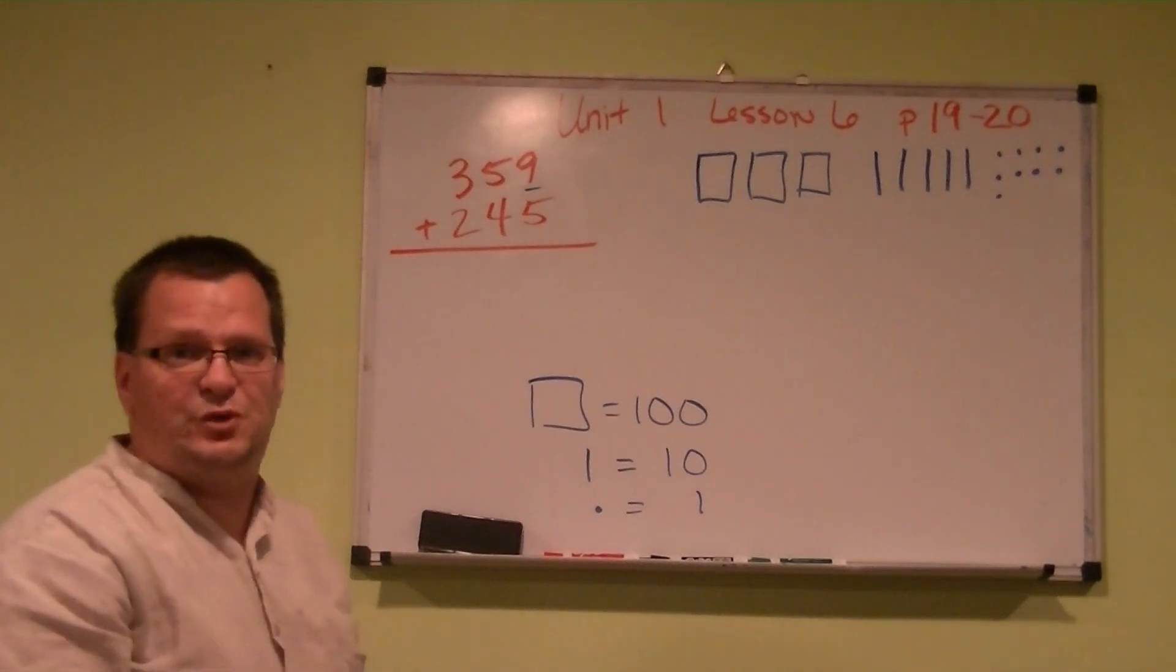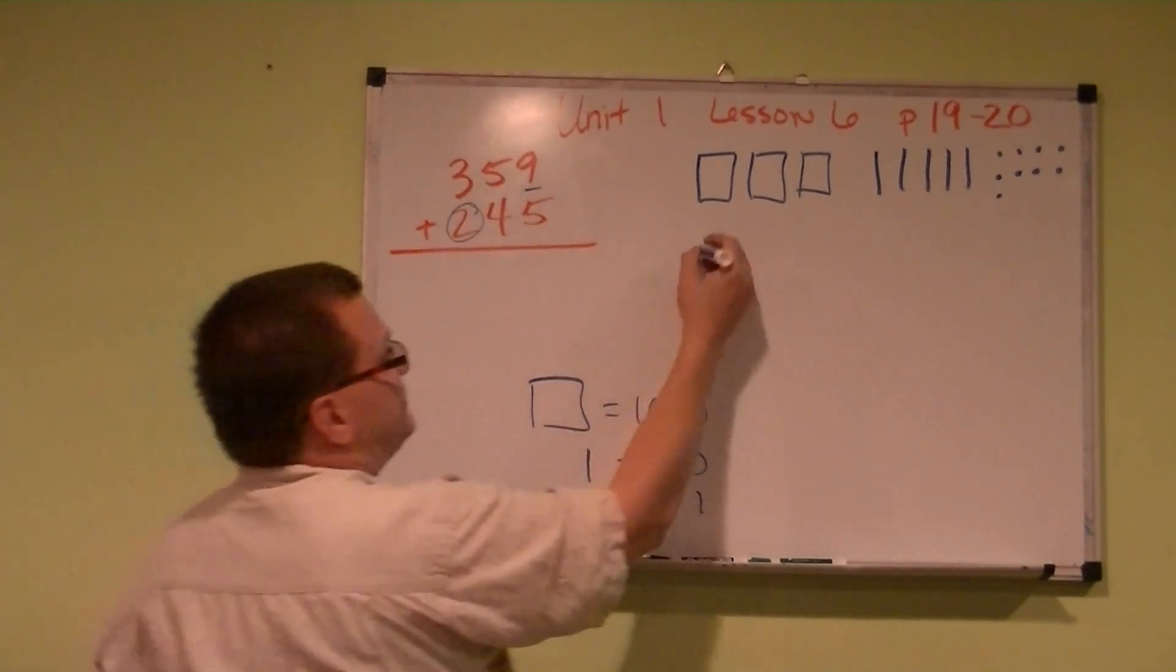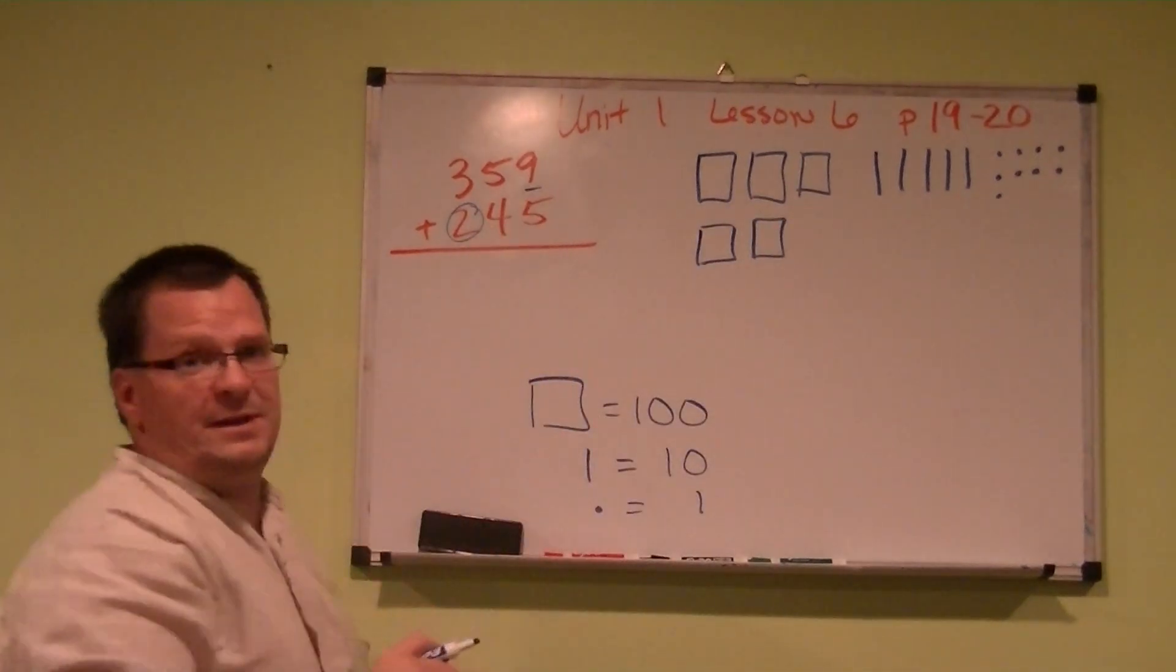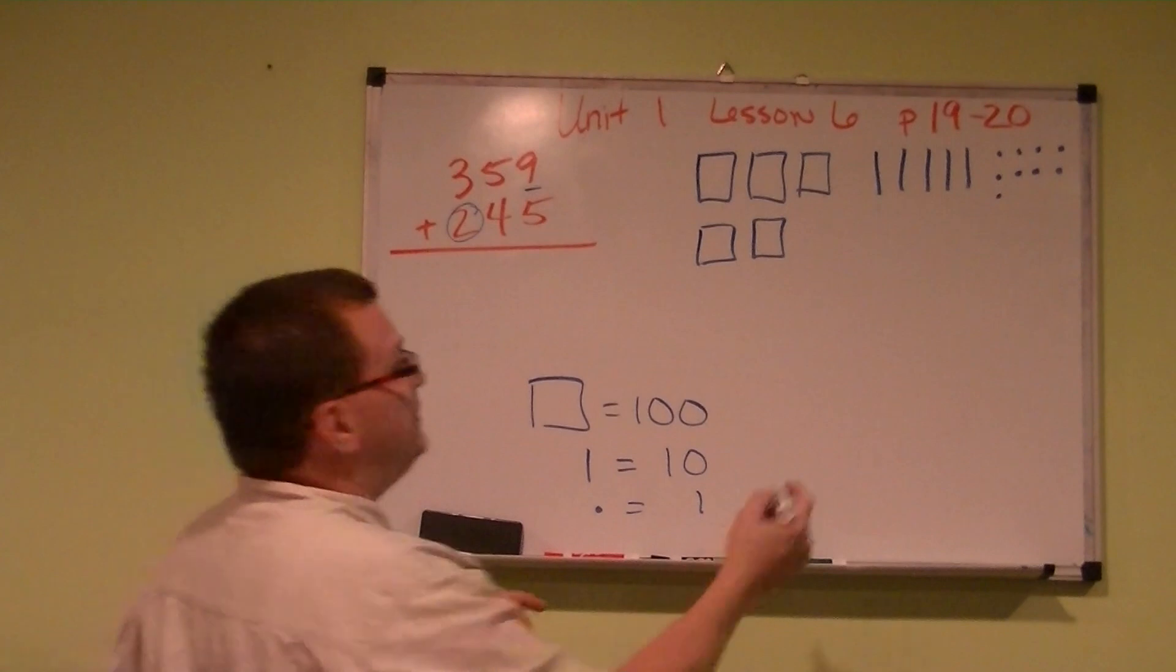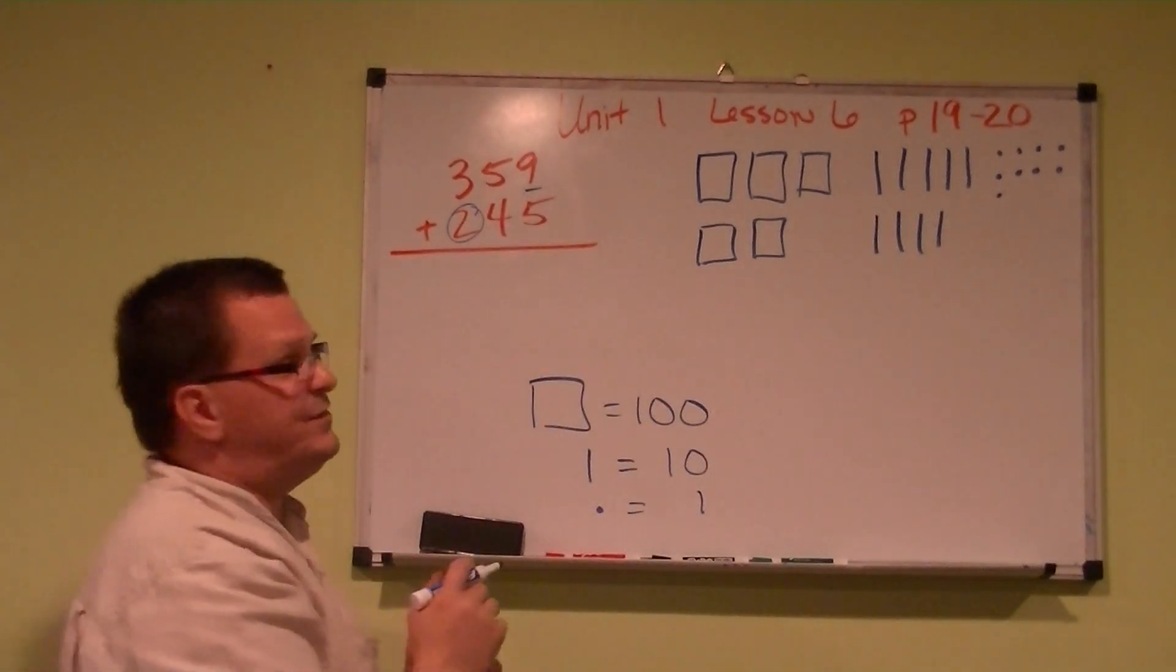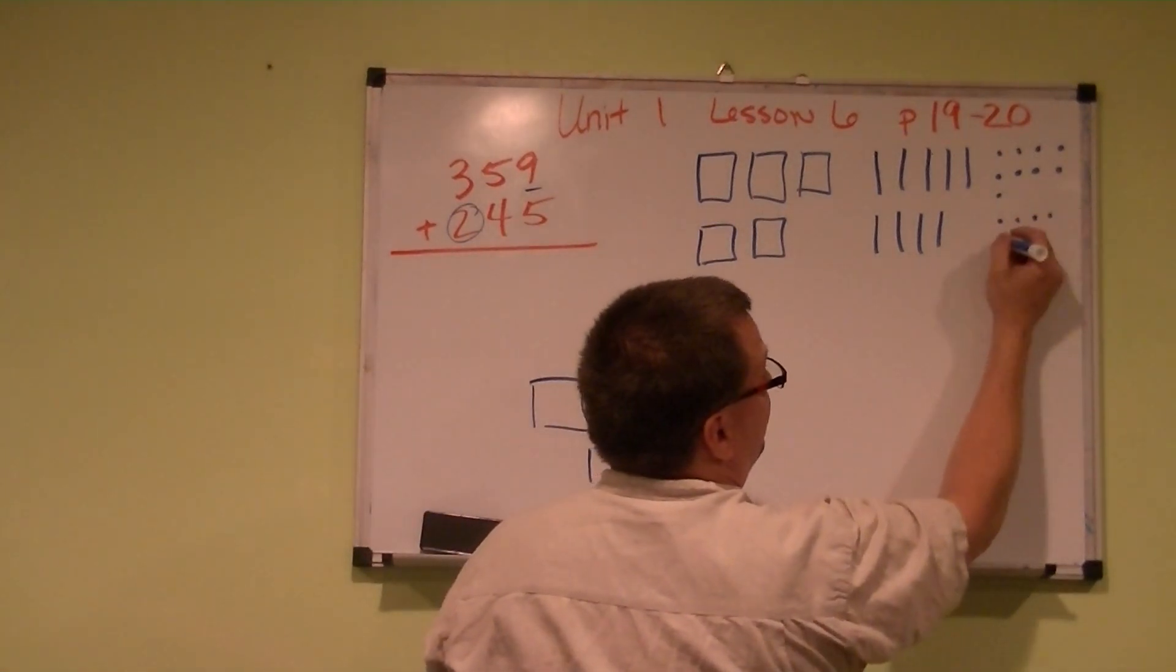Then we're going to go to the next one, it's 245. So the hundreds again is 2, so we have 2 big boxes. How many tens do we have? We have 4: 1, 2, 3, 4. And how many ones do we have? This time we have 5: 1, 2, 3, 4, 5.